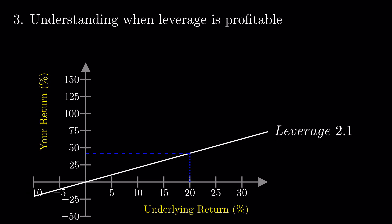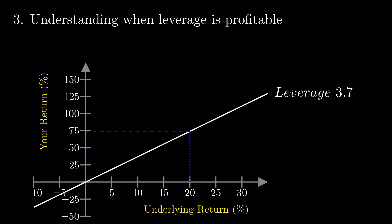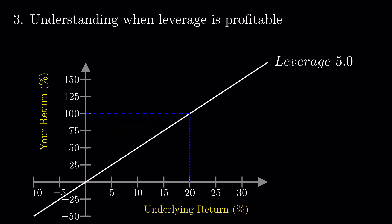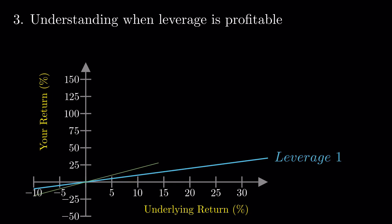Now, we vary the multiplier. Increasing it changes the slope of this line. Let's look at the graphs for leverage 1, 2, and 5.